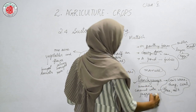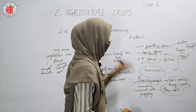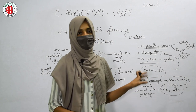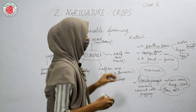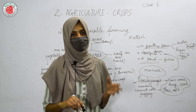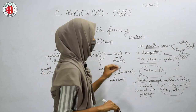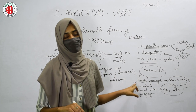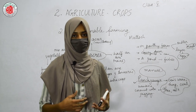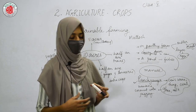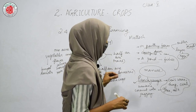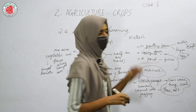Besides these five cow products, you also need banana, coconut water, and jaggery to make Panch Gavia. All these ingredients are mixed in a proper manner, then water is added to make it into a liquid form. Once ready, this liquid manure is spread into the fields to grow more crops and get more yield.